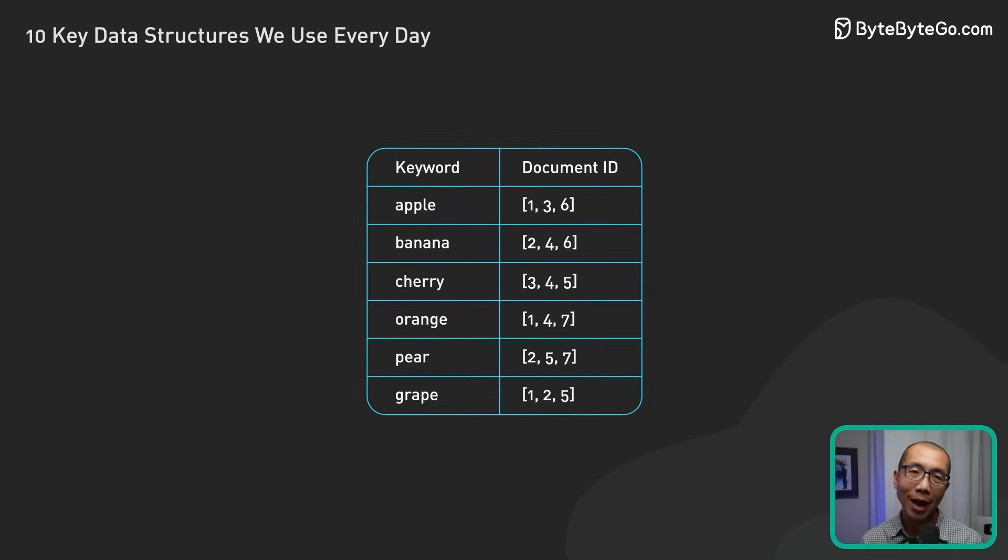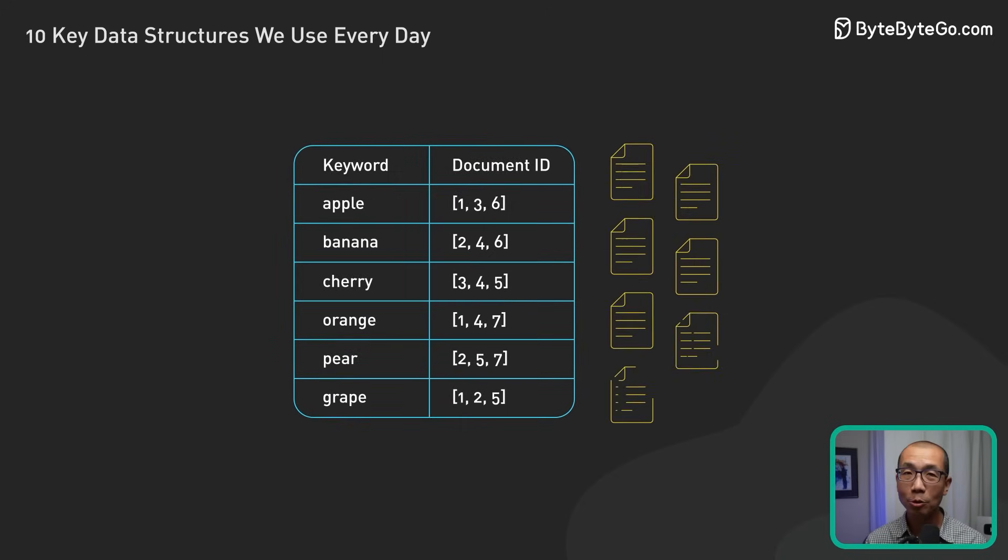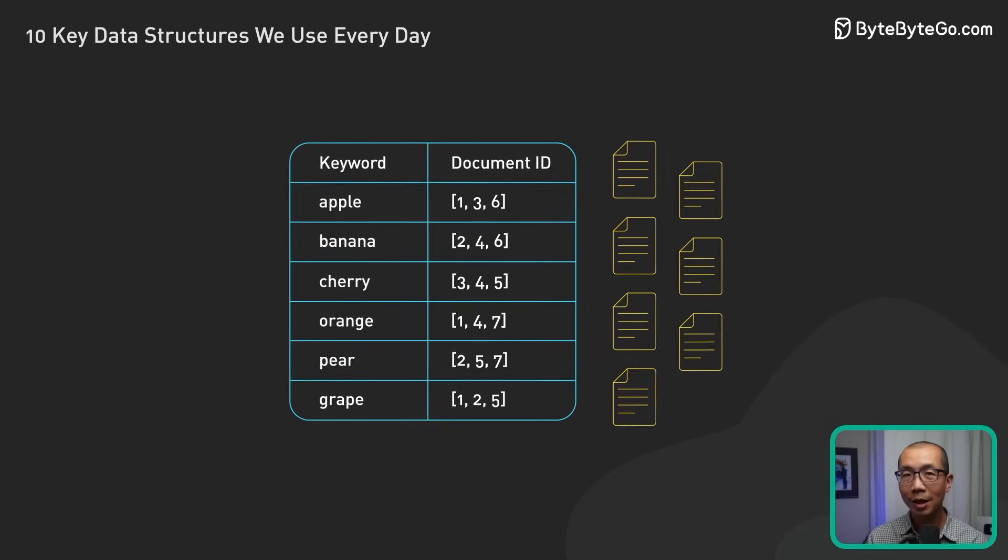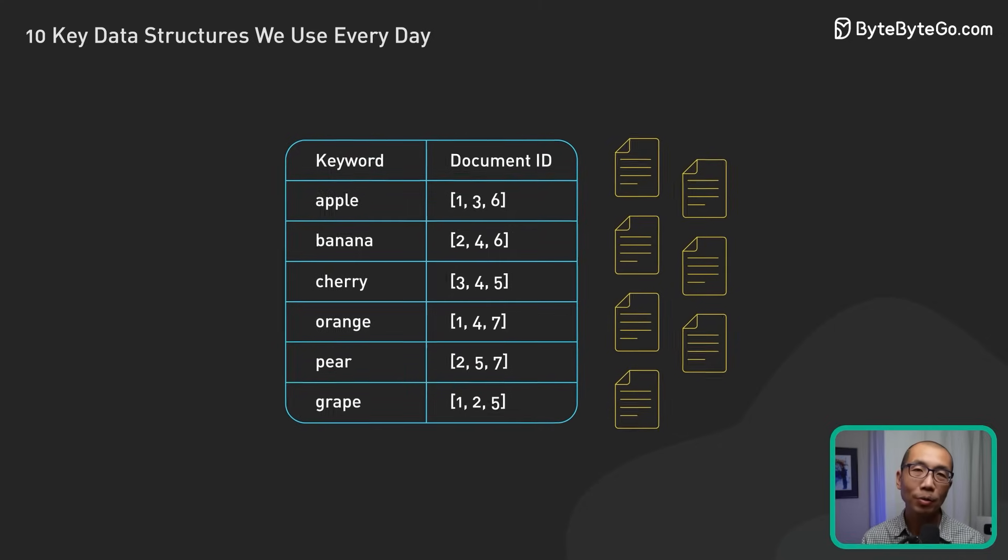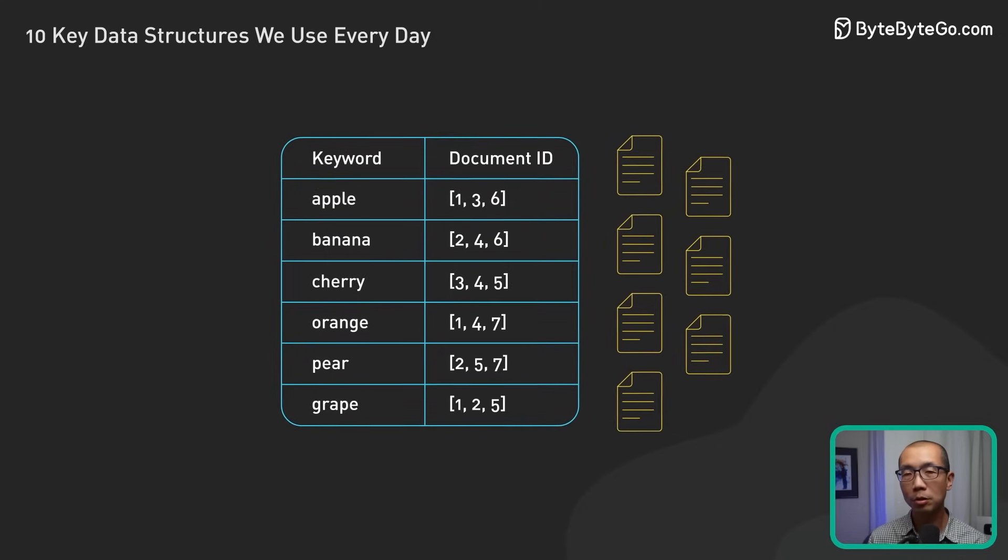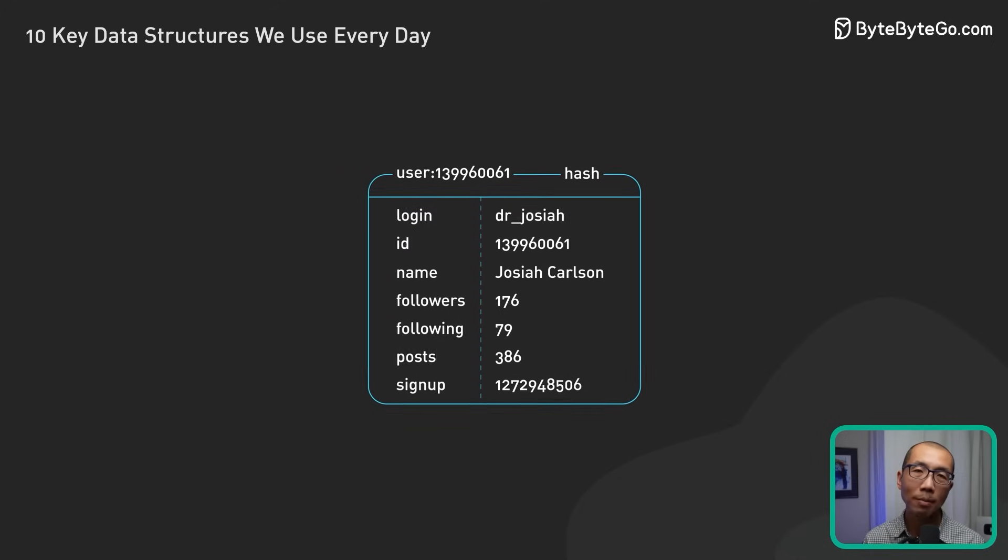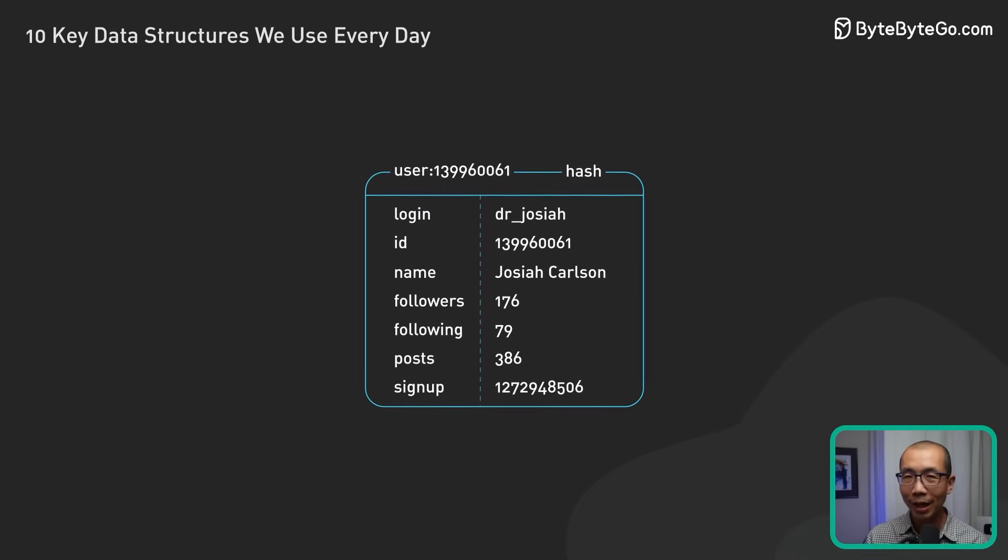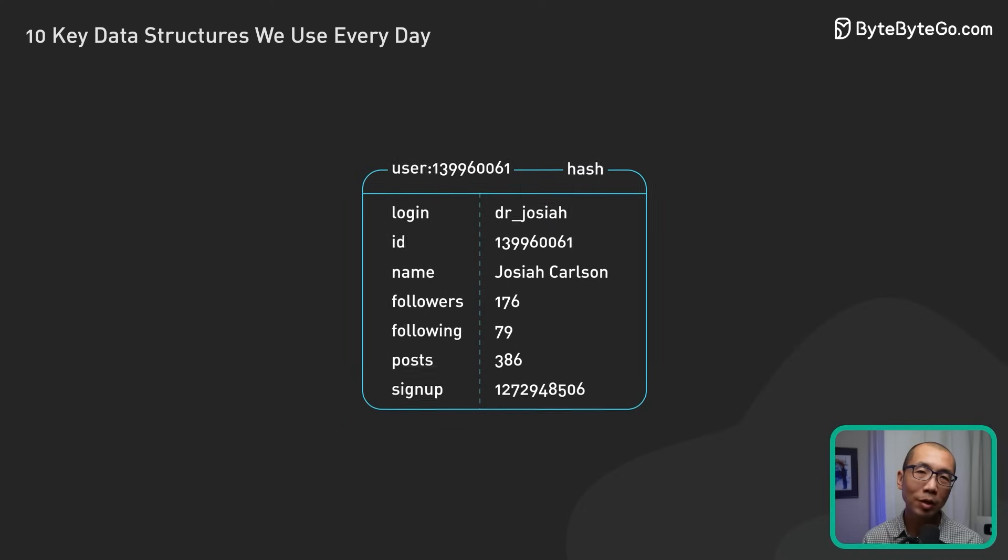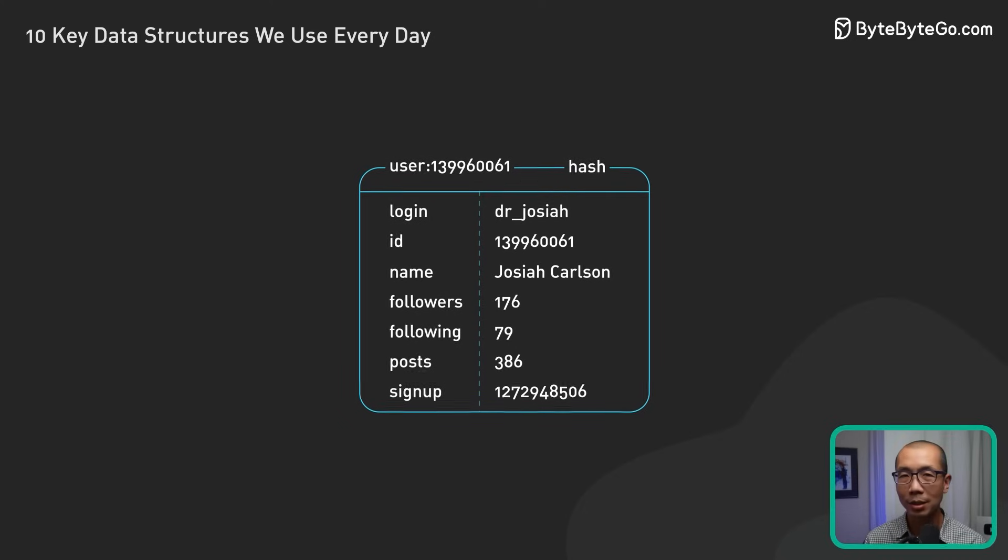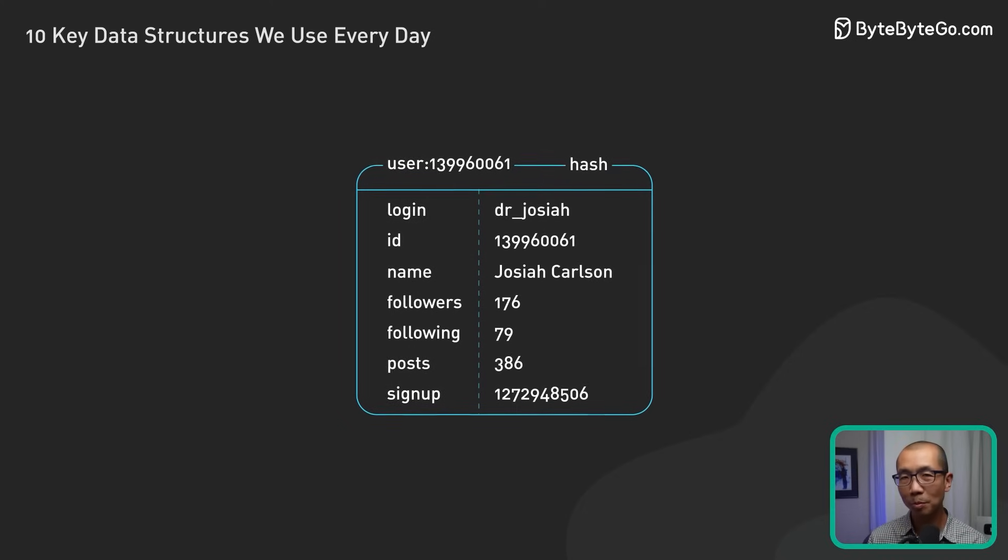In search engines, hash tables can be used to store and quickly retrieve index data based on keywords. This provides fast and relevant search results. Caching systems may use hash tables to store and manage cached data. It allows for rapid access to frequently requested resources and improves overall system performance.